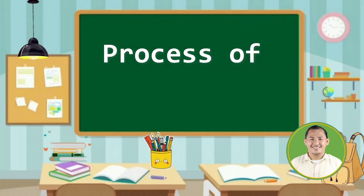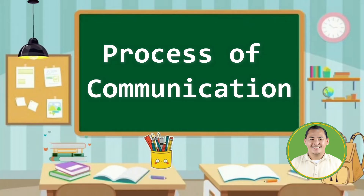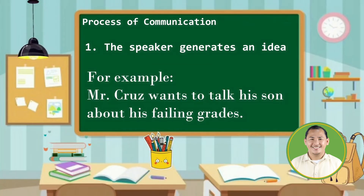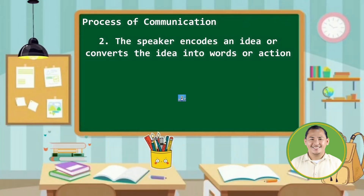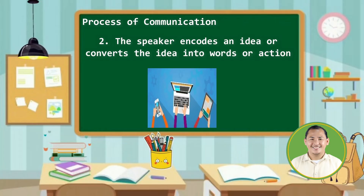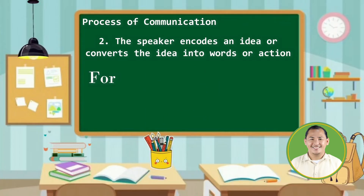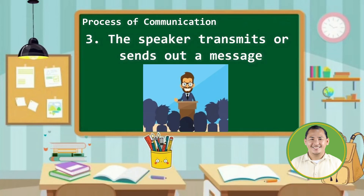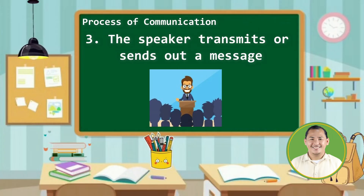Now let us proceed with the process of communication. Number one, the speaker generates an idea. For example, Mr. Cruz wants to talk to his son about his failing grades. Number two, the speaker encodes an idea, or converts the idea into words or action. At this moment, you will be thinking on how you will send the message to the receiver. For example, he decided to talk to him inside his room privately. Number three, the speaker transmits or sends out the message. At this stage, the speaker is already sending the message to the receiver.